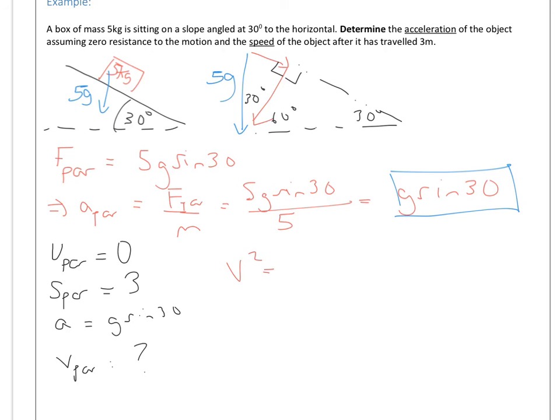Which means that v is going to be the square root, because u is 0, of 2 times by g sine 30, which is a, times by 3, which is the displacement. So let's plug that into the old calculator: 2 times 9.81 times sine 30 times by 3, square root of answer, is 5.4 metres per second.